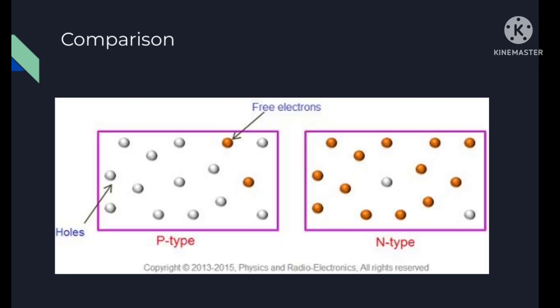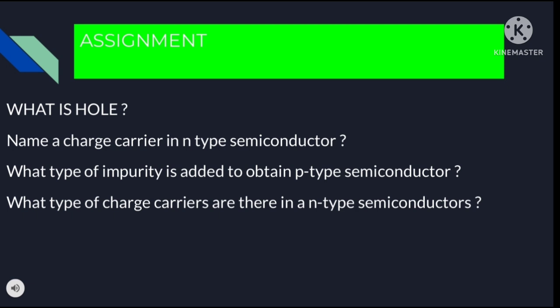Here is a comparison between p-type and n-type semiconductors. In the p-type semiconductor, holes are the majority charge carriers. In the n-type semiconductor, free electrons are the majority charge carriers. As an assignment: (1) What is a hole? (2) Name a charge carrier in n-type semiconductor. (3) What type of impurity is added to obtain p-type semiconductor? (4) What type of charge carriers are present in n-type semiconductor?